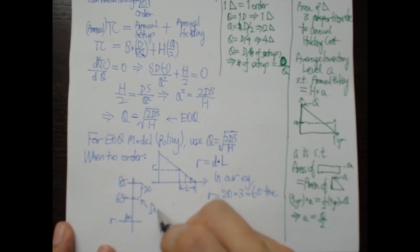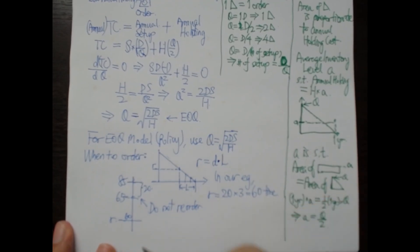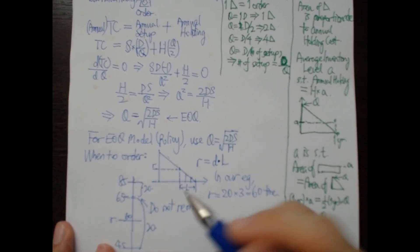Do not reorder because we haven't crossed the reorder point. Somebody bought another 20 tires, now we are left with 45. Do we reorder? Yes.